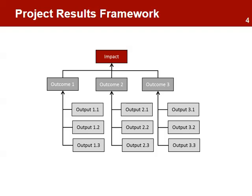The results framework has many variations, but most of them don't include the activities and only focus on the results — the outputs, outcomes, and impact. Activities and inputs are represented on the activity schedule. The results framework may include one or more outcomes, each necessary to contribute to the long-term impact. Each outcome will include all the necessary outputs required to achieve the outcome objective.